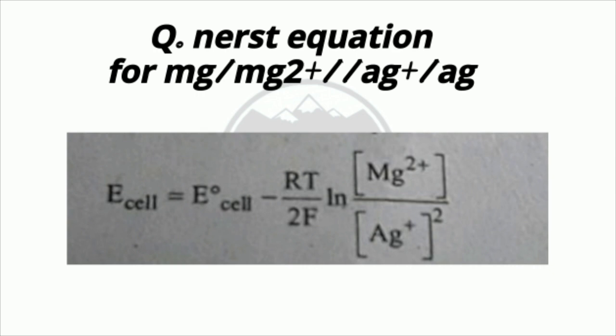Question 6: The electrochemical equation is: MG → MG²⁺ + 2e⁻, and AG⁺ + e⁻ → AG. The cell EMF equation is: E_cell = E°_cell − (RT / 2F).